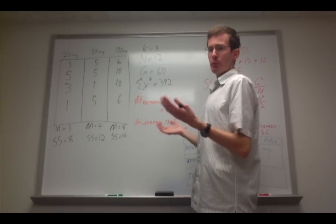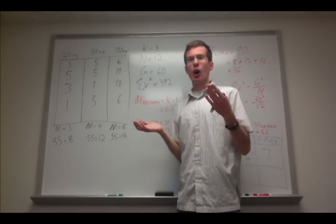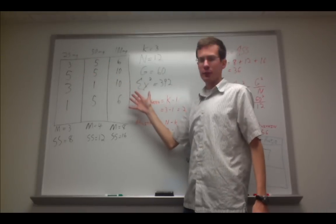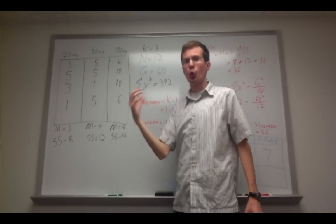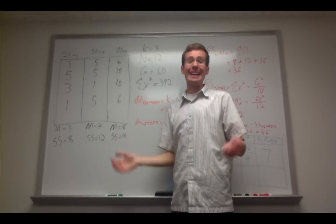N is the total number of people or observations in our experiment. So across all of these different groups, we have a total of 12 observations. So N equals 12.